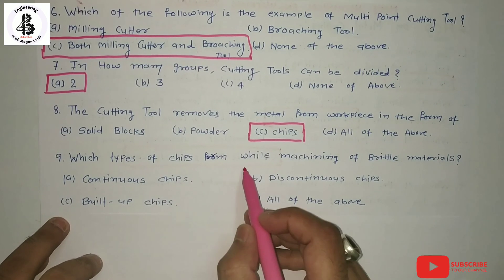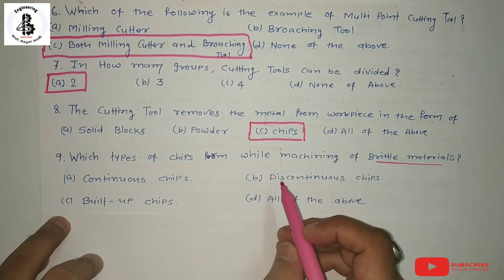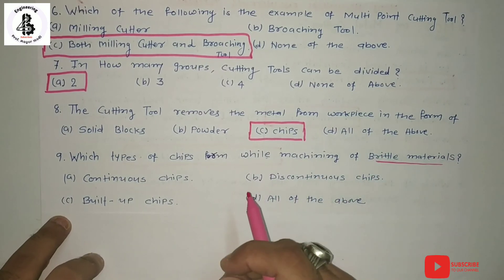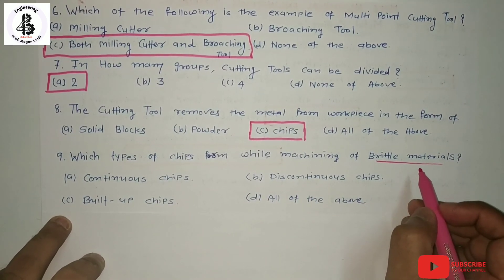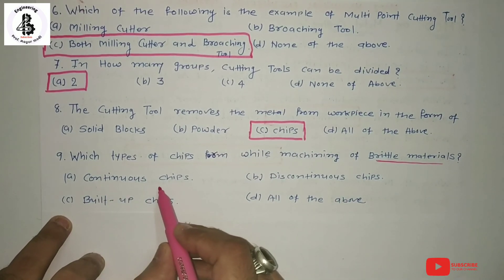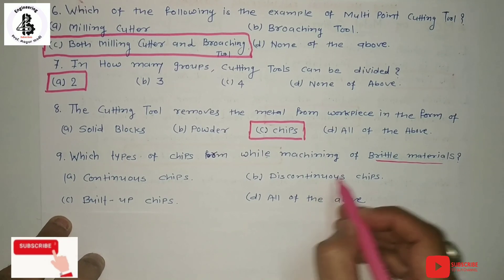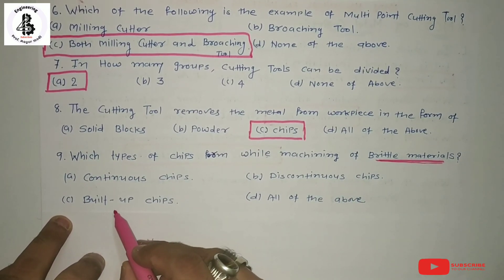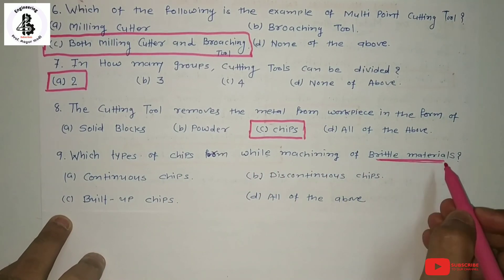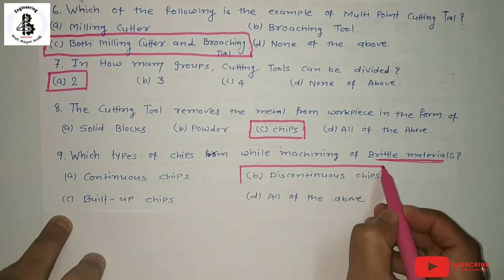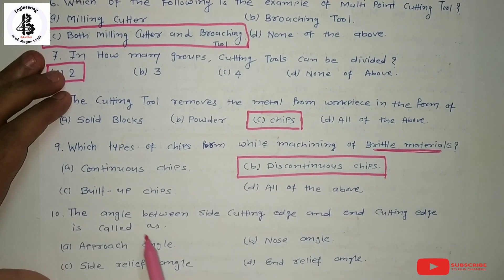Ninth question: Which type of chips form while machining brittle materials? There are two types of materials — brittle and ductile. Options are: continuous, discontinuous (segmental), built-up edge, and all of the above. Continuous chips form in ductile materials. Brittle materials always produce discontinuous types of chips. So the answer is B: discontinuous chips.